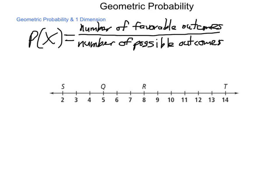What we want to know is what's the probability that K lies on the interval of QR. The way we would calculate this is to find the length of QR, which we do through subtraction. So we'd have 8 minus 5 divided by the entire length of the line segment, length of ST, which would be 14 minus 2.